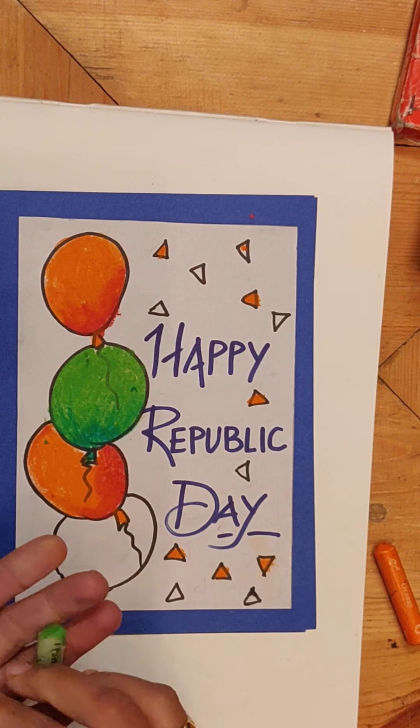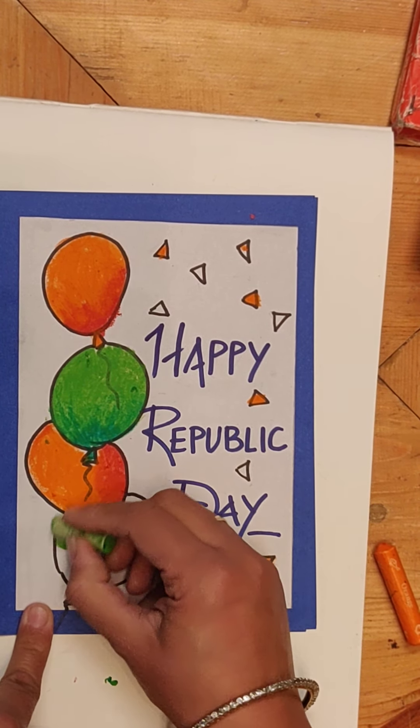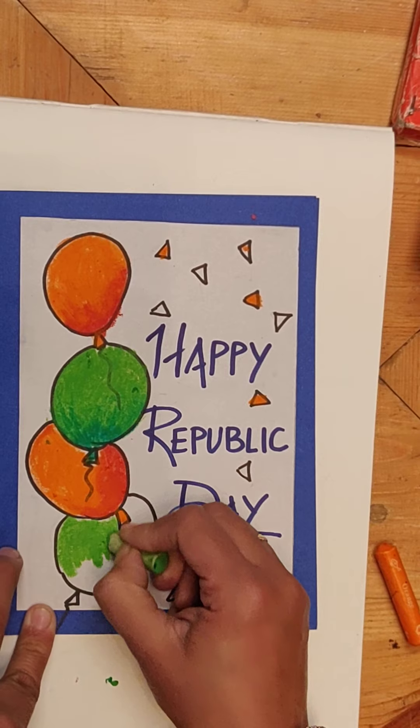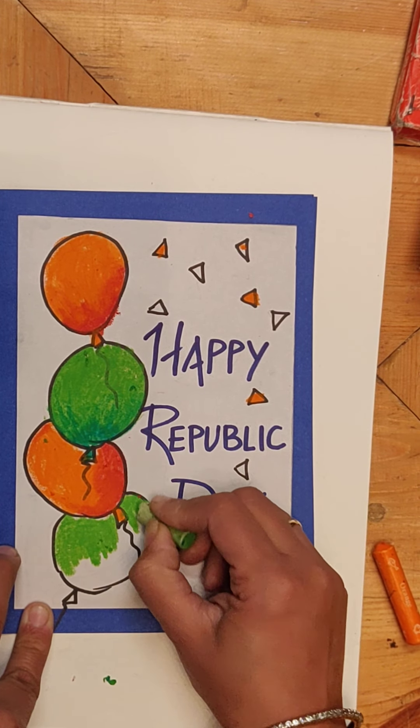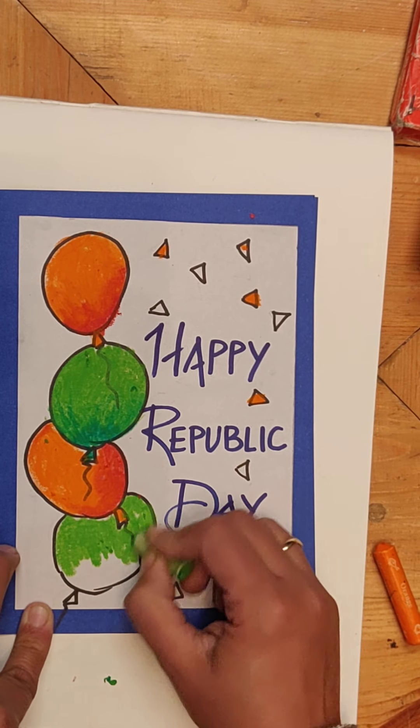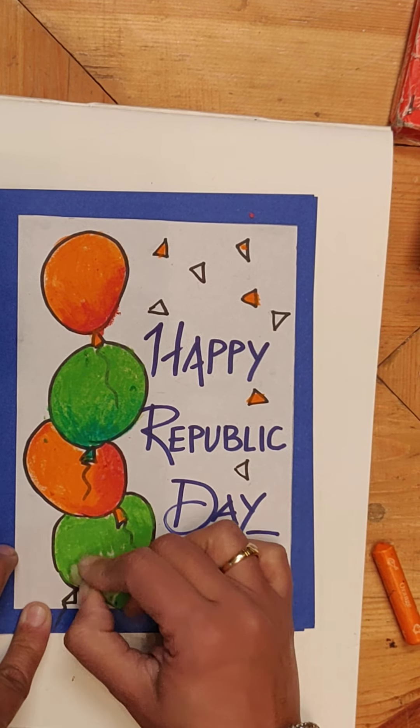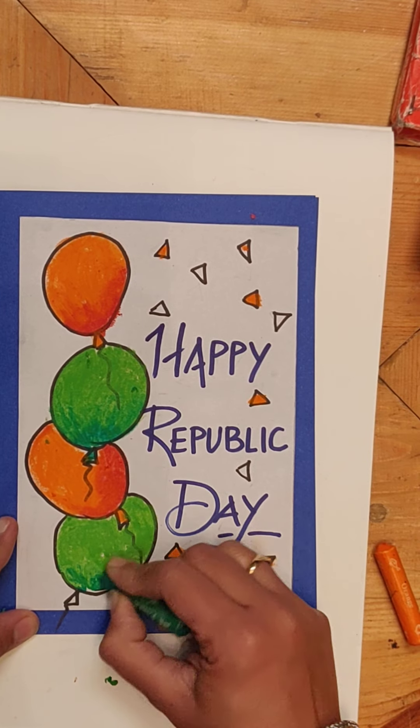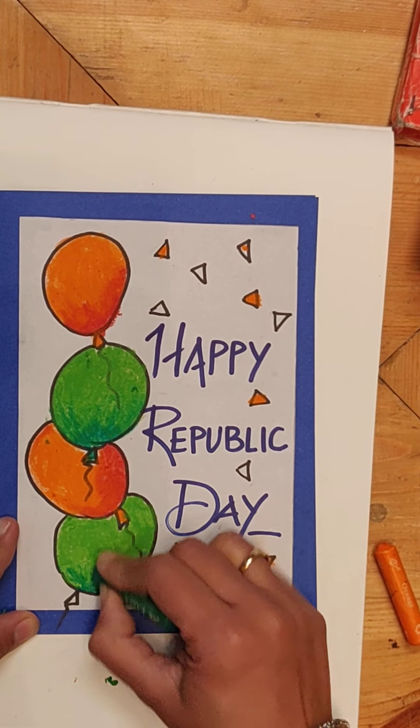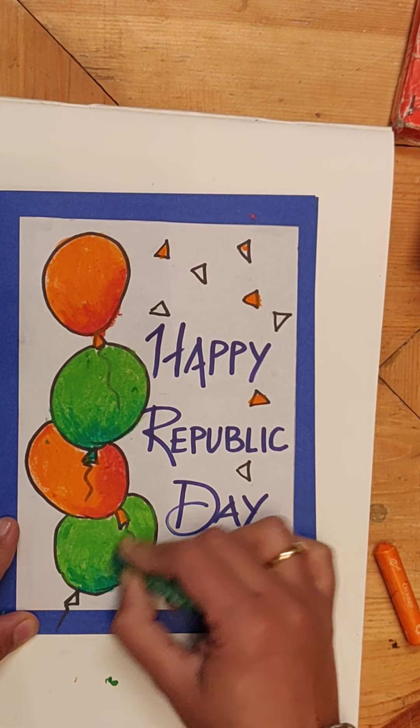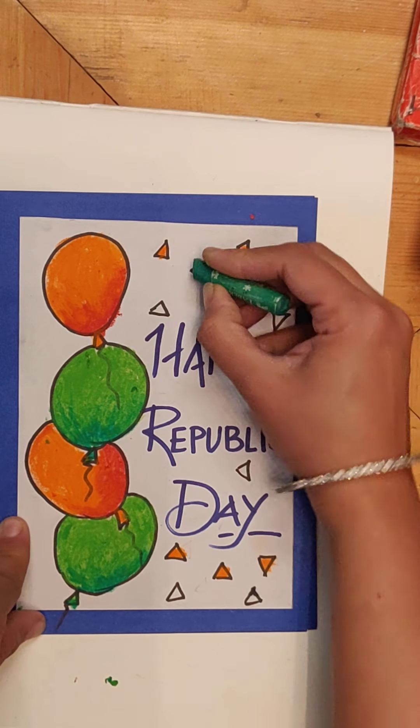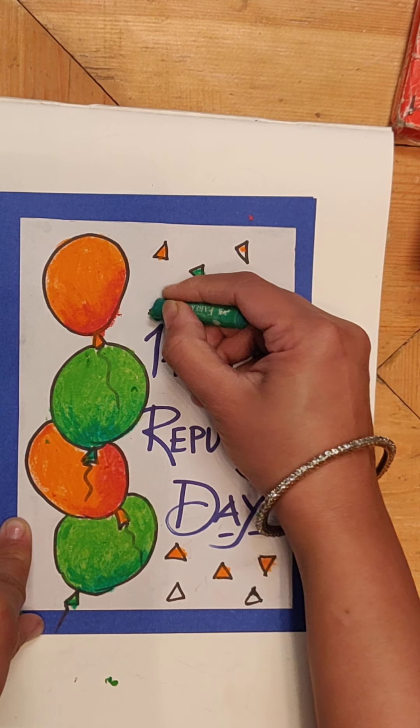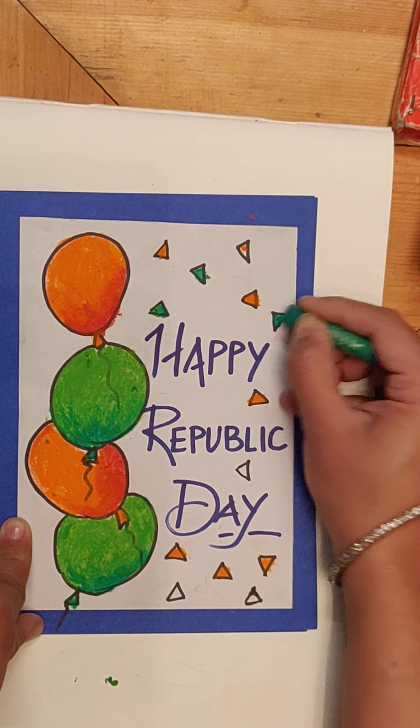The same way I will again use the light green color and I will add the dark green color to it. The leftover triangles I am adding the dark green color to. You can use sketch pen also to fill the colors in these small triangles.